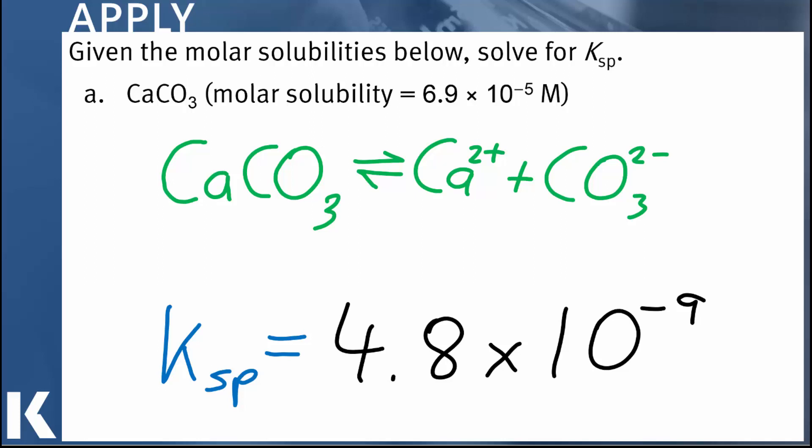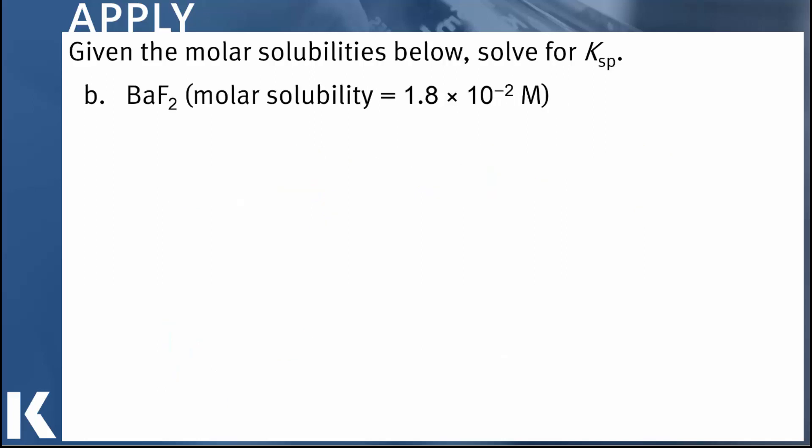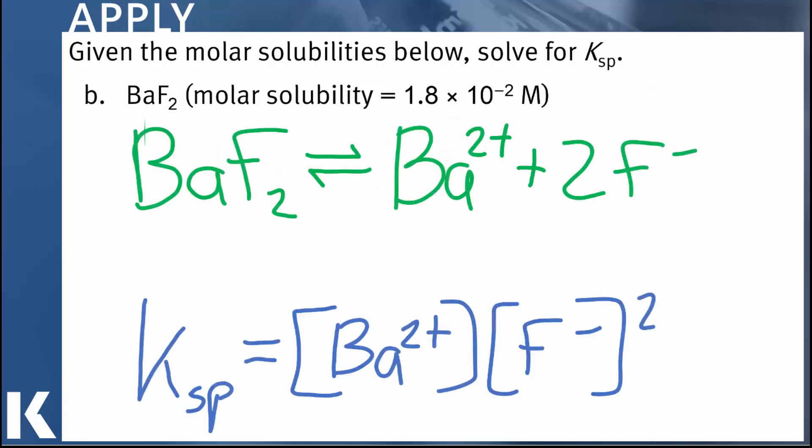Alright, let's take a look at one more example. And this one's a little more complicated, but I think it's going to be worthwhile because it'll show you how we can take this general idea and apply it to any solution equilibrium you might come across. Alright, so here we have barium fluoride, molar solubility 1.8 times 10 to the minus 2 molar. We'll start out with our first basic two steps. We'll write that equilibrium expression, and we'll write the Ksp expression.